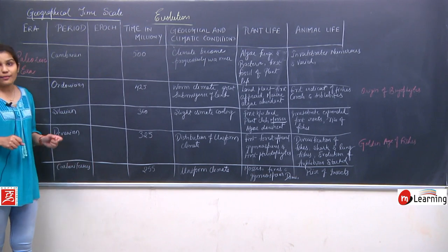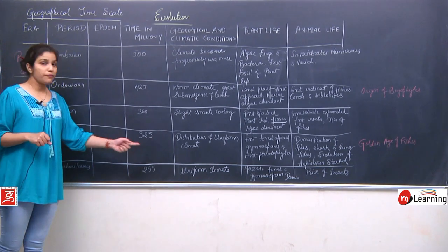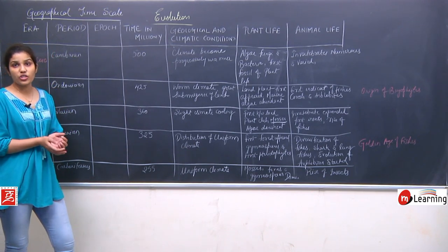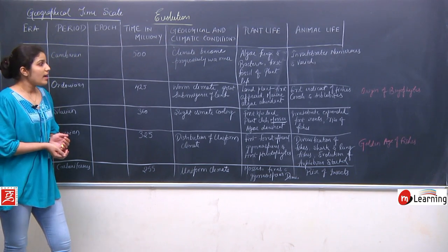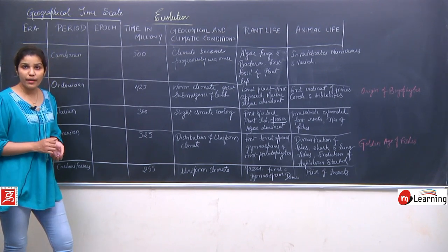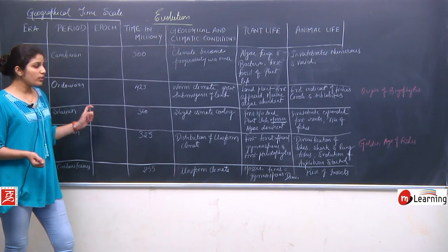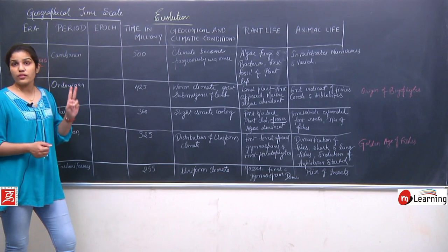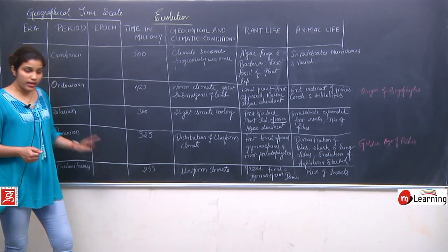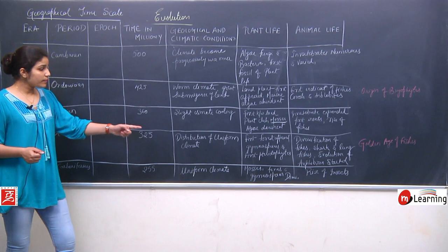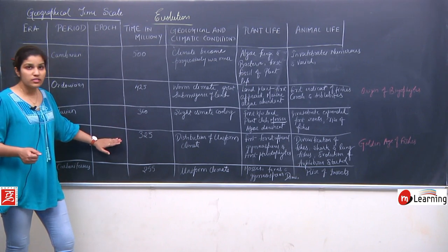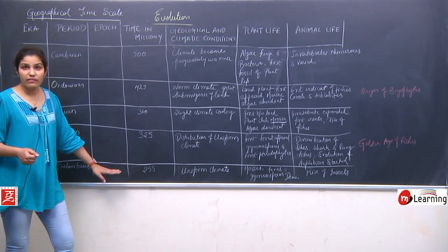The fifth period is the Carboniferous, around 255 million years ago. The climatic conditions were still uniform, as distributed in the Devonian period. In plant life, mosses, ferns, and gymnosperms became dominant. Gymnosperms and pteridophytes first appeared in the Devonian period, and in the Carboniferous period, ferns and gymnosperms became dominant.